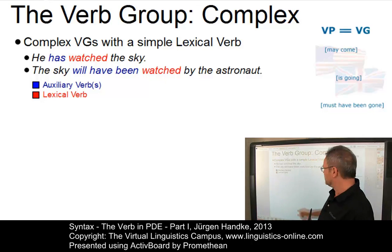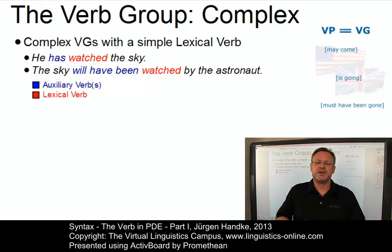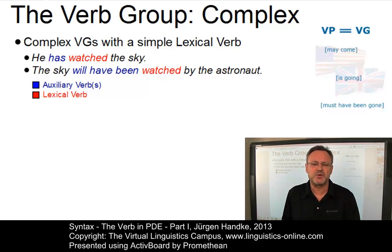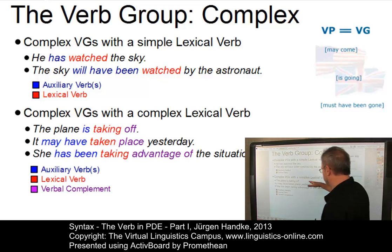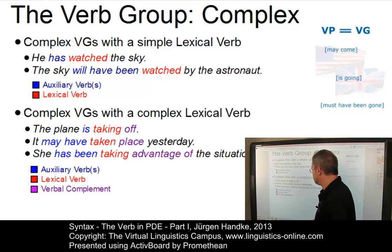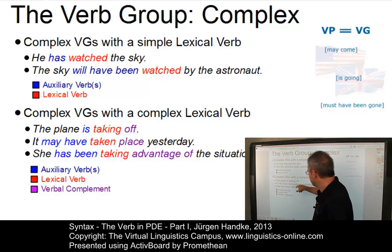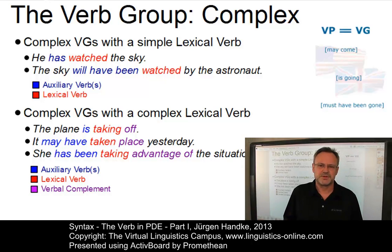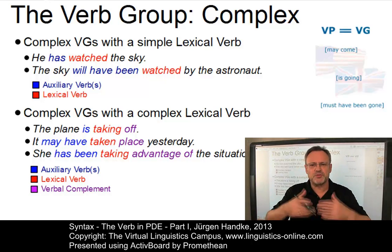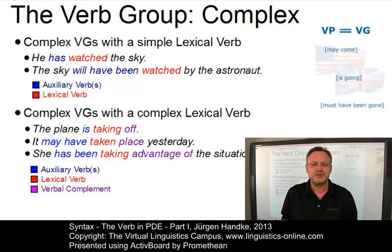Like simple verbs, complex verbs may occur in complex verb groups, in which case they occupy the rightmost position and are preceded by maximally three auxiliary verbs. For example: 'The plane is taking off'; 'It may have taken place'; 'She has been taking advantage of the situation'. These are the possibilities of organizing the verb group in present-day English.